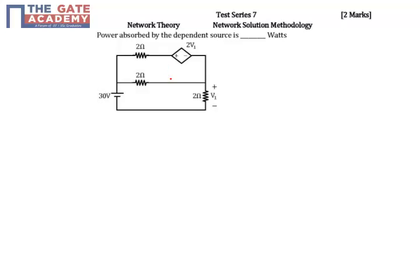In this problem, we're asked to find the power absorbed by the dependent source. First, to find out v1. If you find v1, you can find out the voltage of this dependent voltage source, and after that you find the current through this.